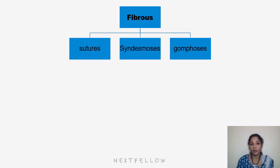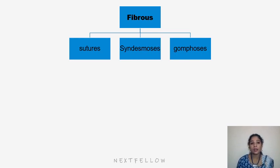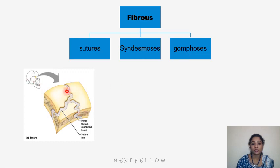Under immovable joints we discuss fibrous joints based on structure. Fibrous joints occur when bones are separated by only connective tissue and movement between them is negligible. Fibrous joints are united by fibrous tissue — for example, the fibrous tissue present in the vault of the skull forms sutures, which are examples of fibrous joints.